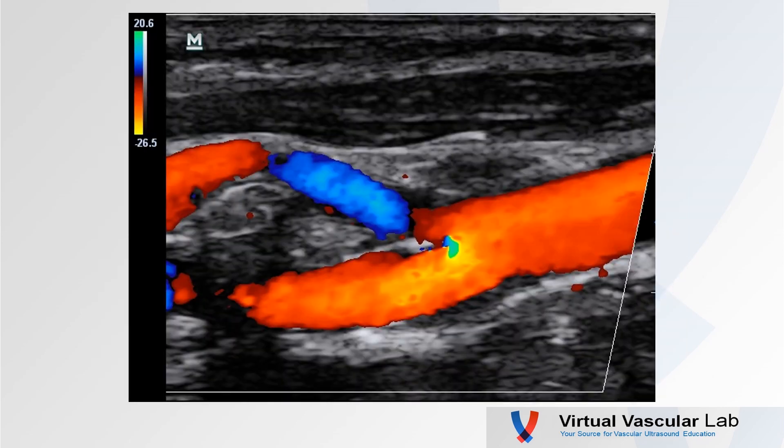A quick look at a carotid bifurcation — we see the distal common carotid and internal carotid artery, with flow away from the transducer shown as red. We also see that short segment of the proximal external carotid artery. In this case, the instrument sees flow moving towards the transducer, so it's colored blue.